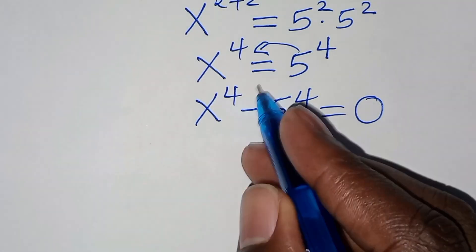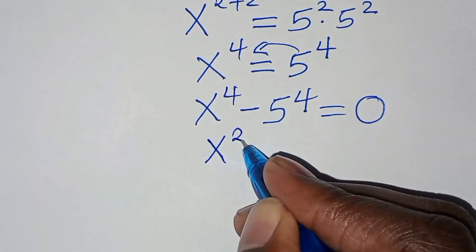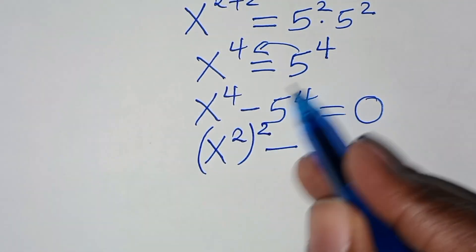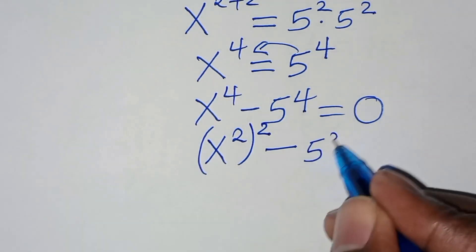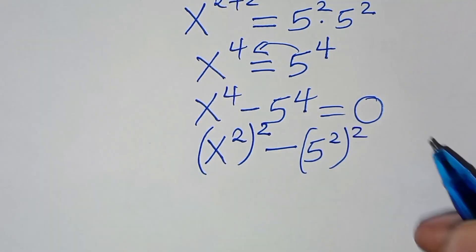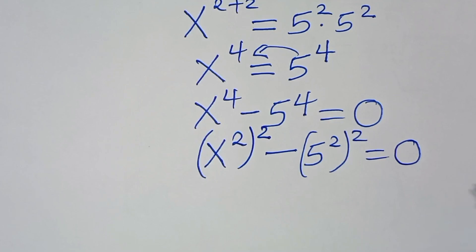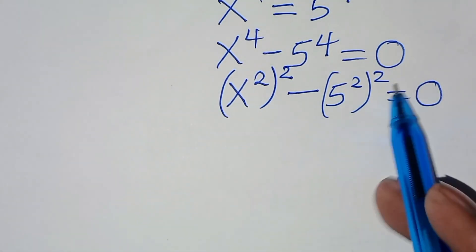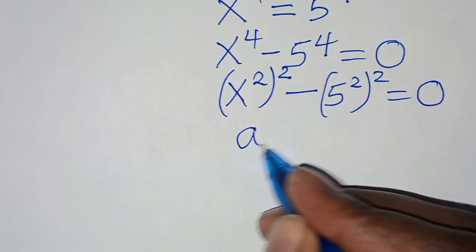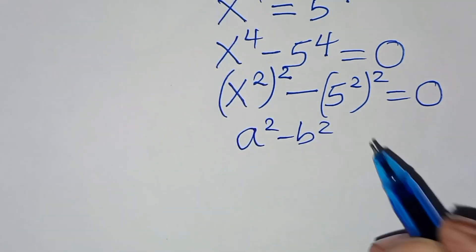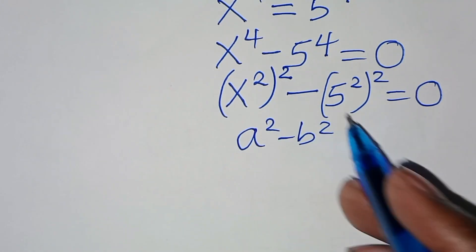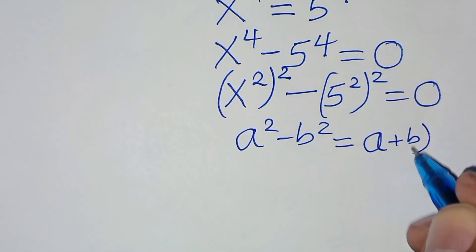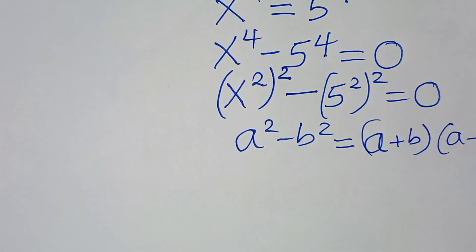We can express x to the power 4 minus 5 to the power 4 as x to the power 2 squared minus 5 to the power 2 squared, equal to 0. This equation is in the form of a squared minus b squared, the difference of two perfect squares, which we can express as a plus b times a minus b.